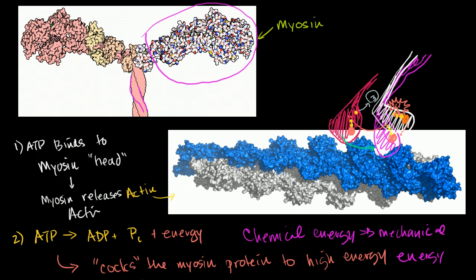It starts attached, ATP comes and bonds onto it, which causes it to be released. Then the ATP hydrolyzes into ADP and a phosphate group, and when that happens, that energy is released, putting the protein into a higher energy state. This spring-loads the protein, and then it attaches up another notch on the actin filament. The phosphate group leaves, causing the power stroke — the conformational change that pushes on the actin filament, moving either the myosin to the left or the actin to the right.